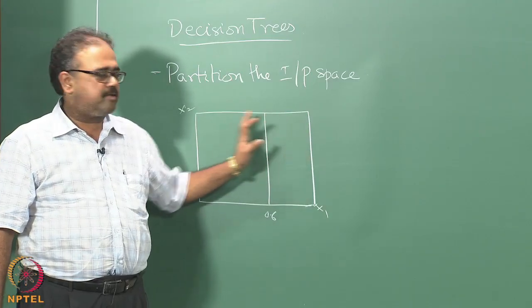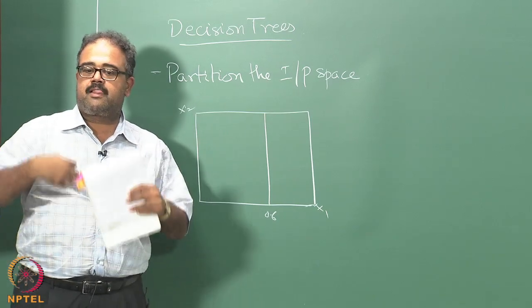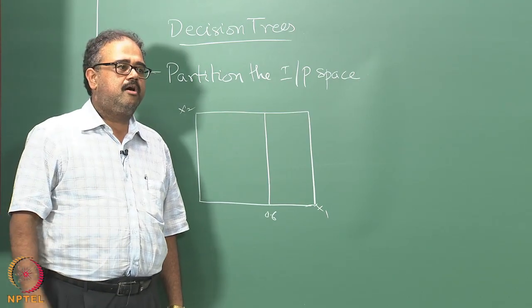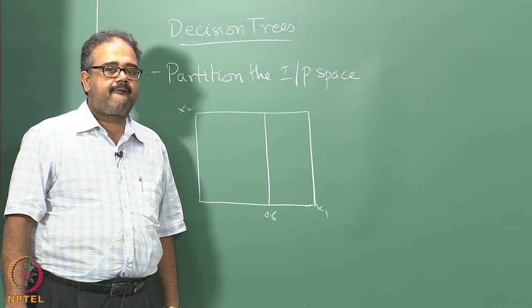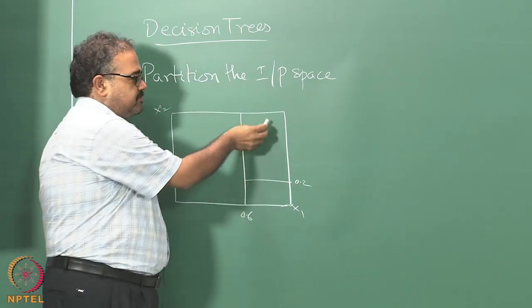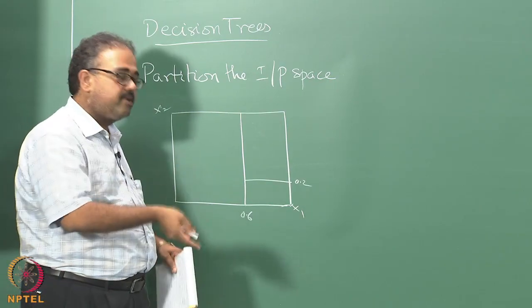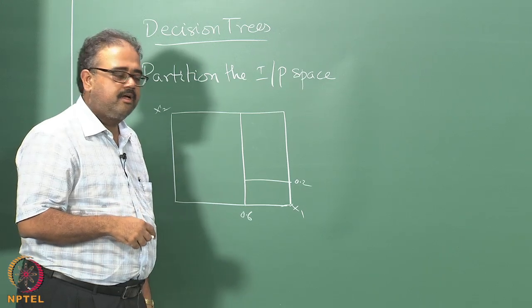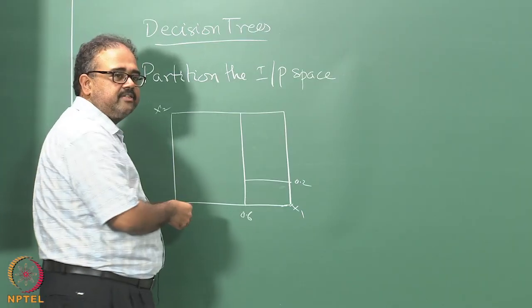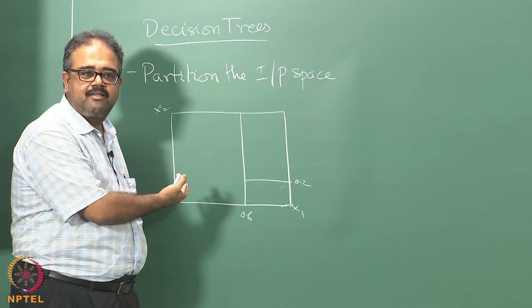If it's greater than 0.6, it'll be here; if less than 0.6, it'll be here. The next question I can ask is: suppose x1 is greater than 0.6, then is x2 greater than 0.2 or not? This region is now x1 greater than 0.6 and x2 greater than 0.2. Here I can ask another question.